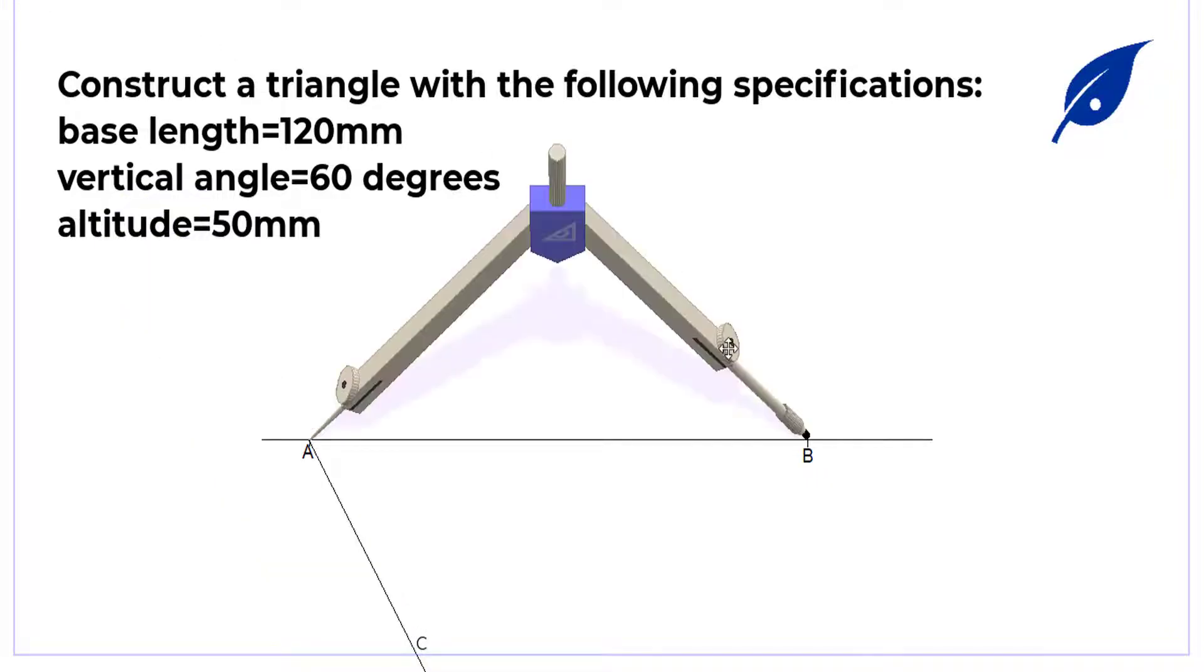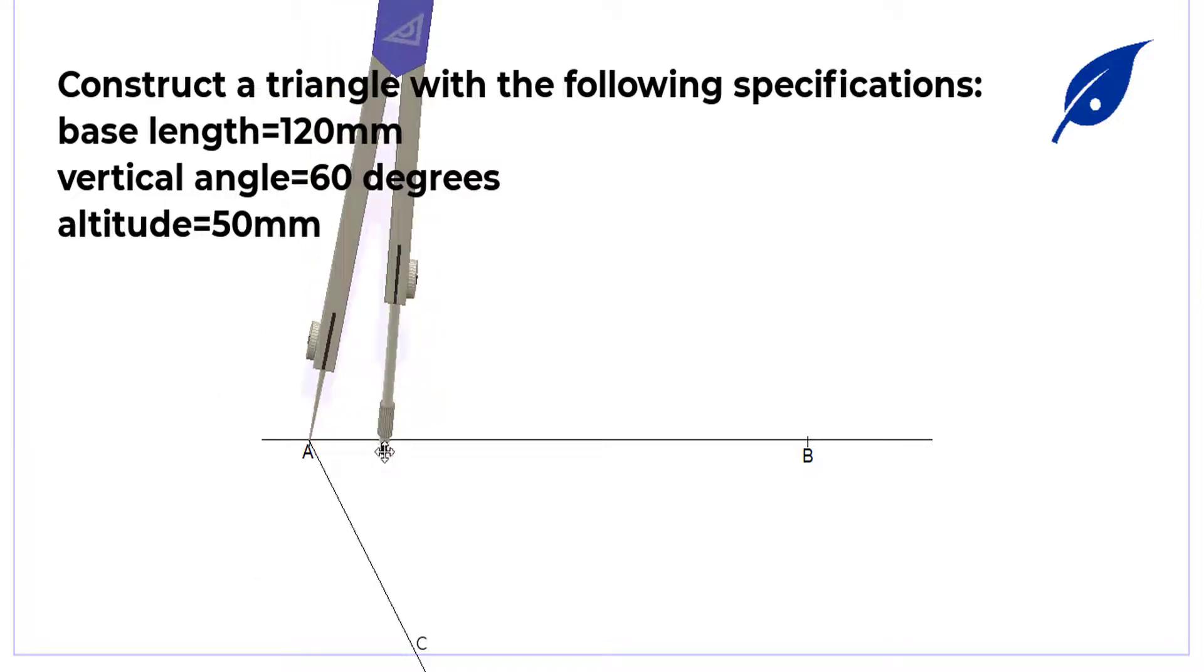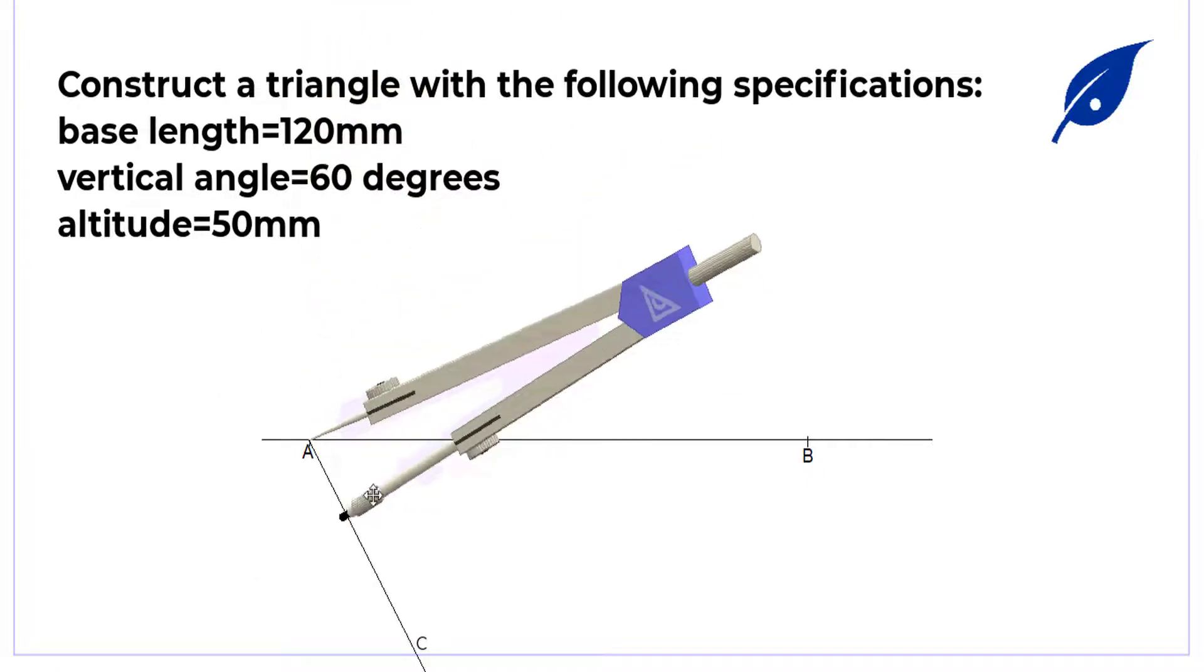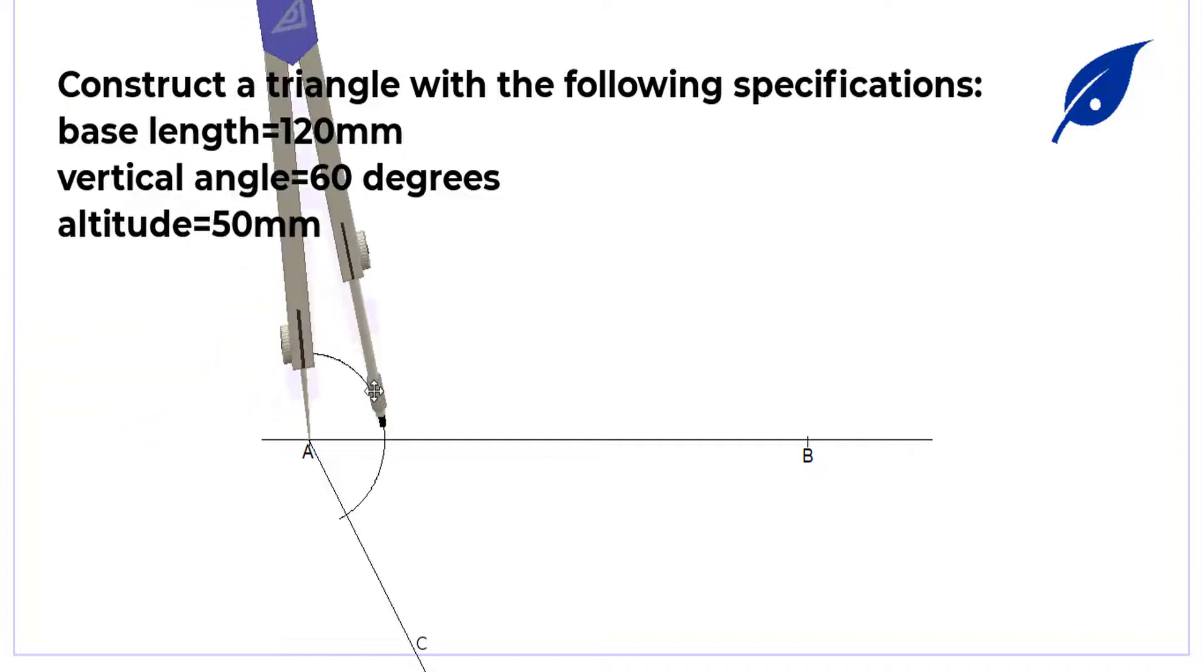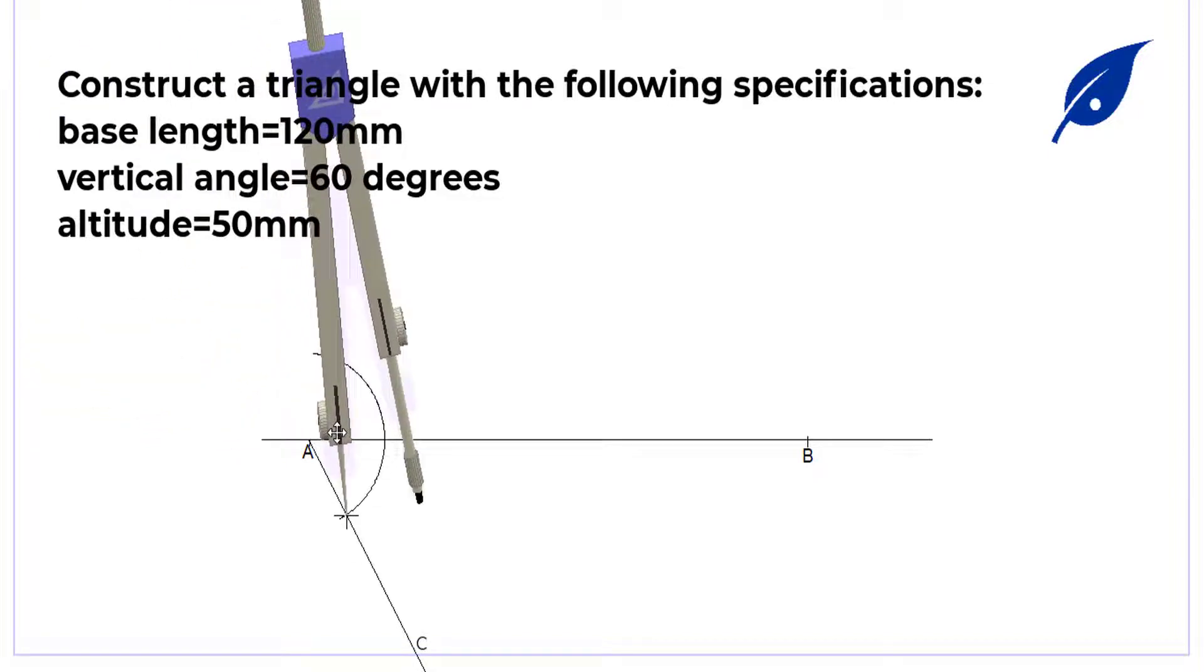Then at the point, we describe the angle of 60 degrees, which will give us AC.